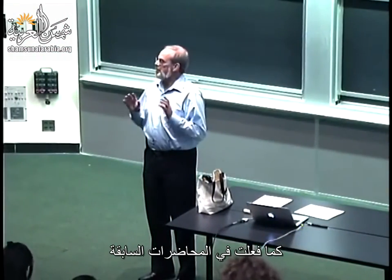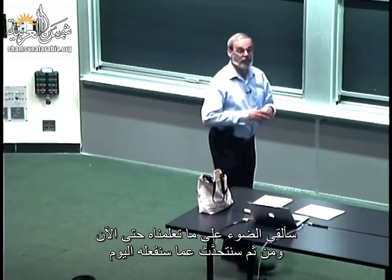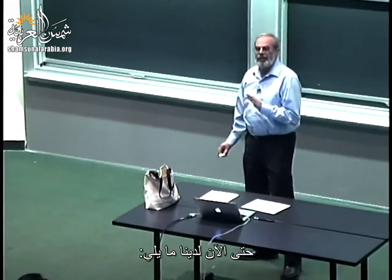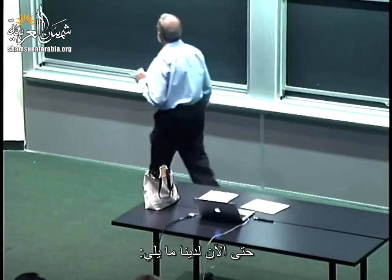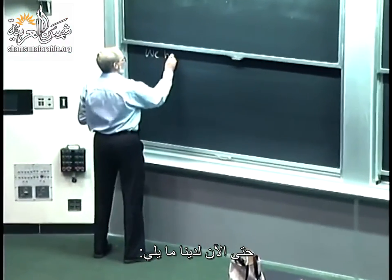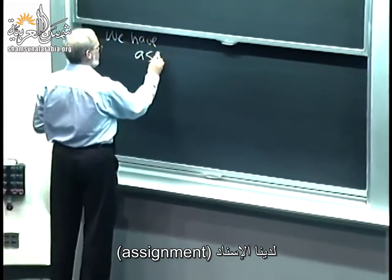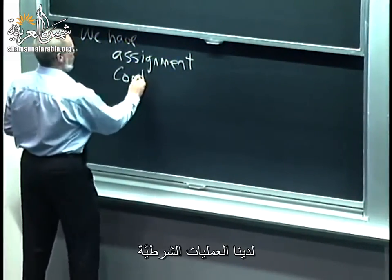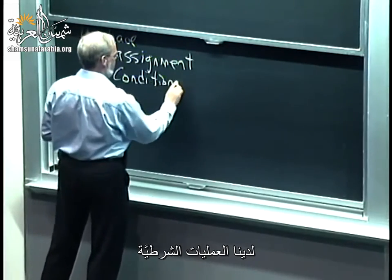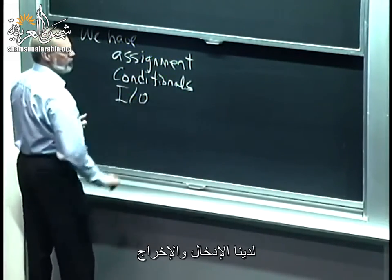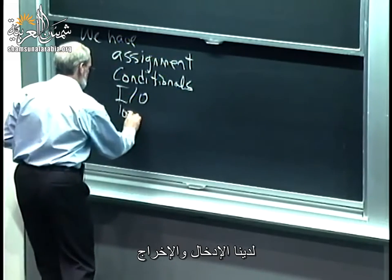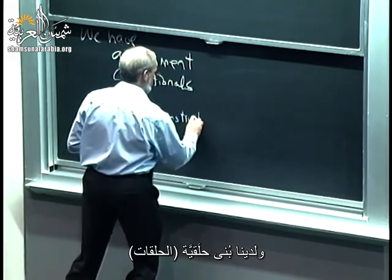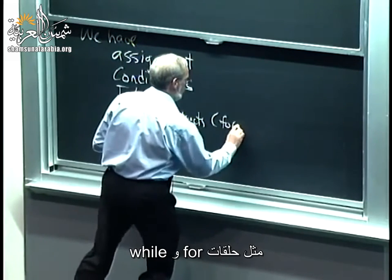As I've done in the previous lectures, let me set the stage for what we've been doing so we can use that to talk about what we're going to do today. So far, we have the following in our language: we have assignment, we have conditionals, we have input-output, and we have looping constructs. These are things like for and while loops.